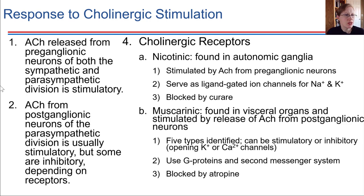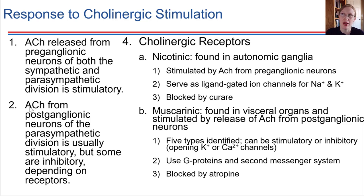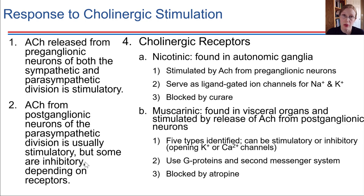When acetylcholine is released from the postganglionic neuron at the involuntary effector, usually it's going to be stimulatory — it will stimulate that target cell. There are some exceptions where it could instead be inhibitory, and that distinction again comes back to what type of receptor specifically was bound.